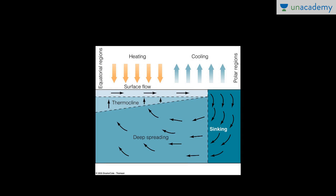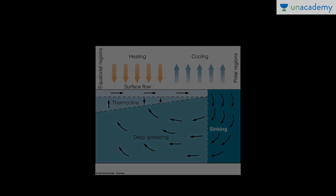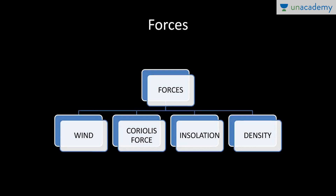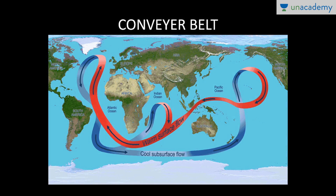As you can see in the diagram, in the equatorial regions water flows on the surface, while in the polar regions water, being denser, sinks. This is the subsurface flow. The warm water represents the warm surface flow, and the cold water represents the cooled subsurface flow.